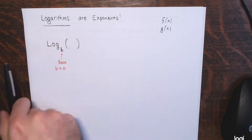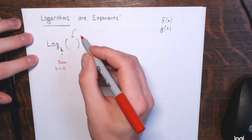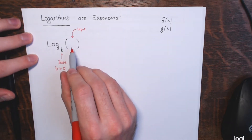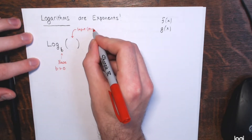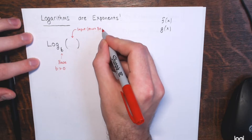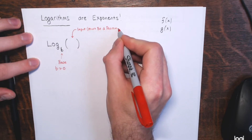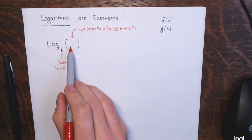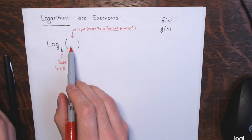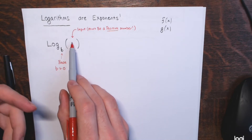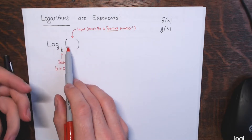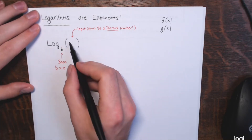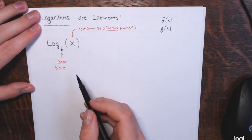Now the key thing you really have to remember: the input must be a positive number. When you input a negative number or zero into a logarithm, something bad happens — it's undefined or not real. You don't get a real number output. So the input, which I'll call x, has got to be positive.